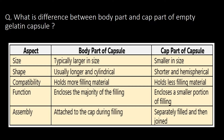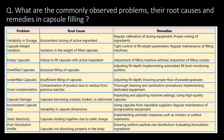What is the difference between the body part and cap part of an empty gelatin capsule? With the following five aspects we can differentiate between them. The body part is typically larger in size whereas the cap part is smaller. Usually the body part is longer and cylindrical, and the cap part is shorter and hemispherical. The body part contains or holds more filling material whereas the cap part holds less filling material.